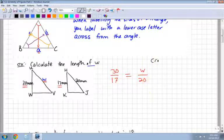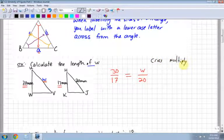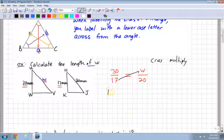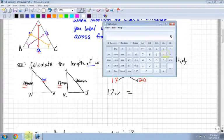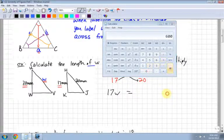Now that I have my two equations set up, 30 over 17 equals W over 20, then I cross multiply. You might remember this from the fractions worksheet at the beginning of the year. I take 17 times W, which is 17W, and that's equal to 30 times 20, which is 600.